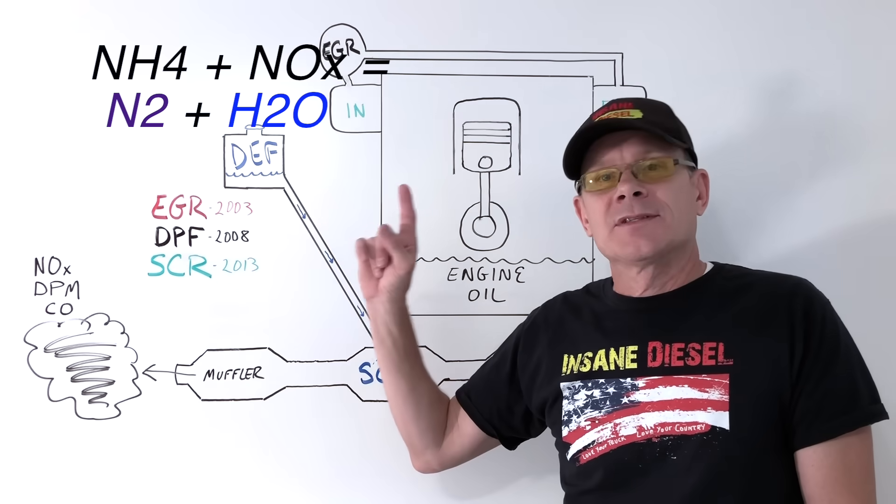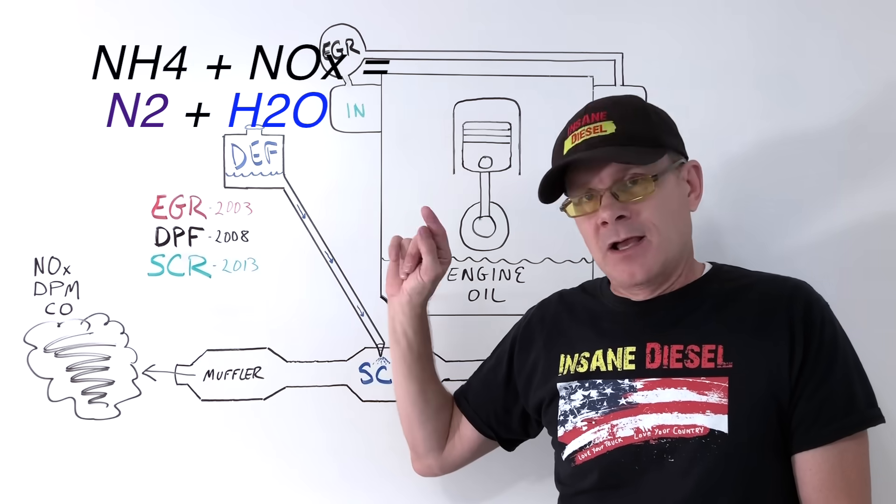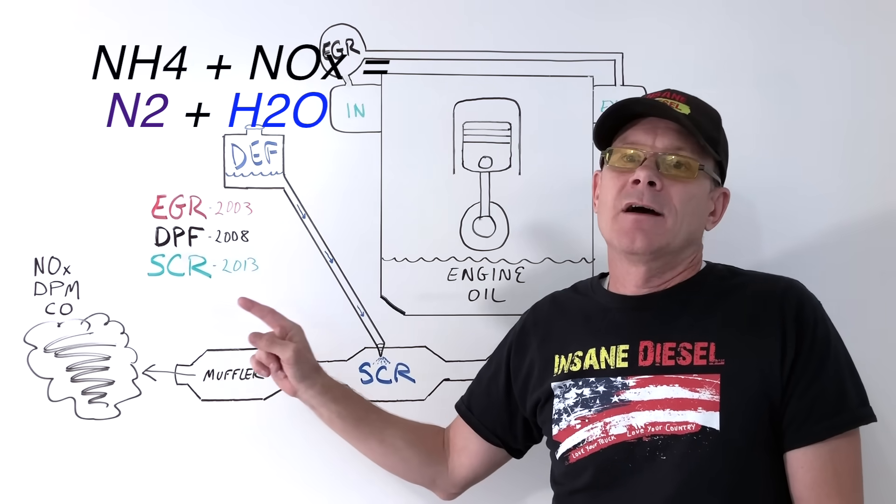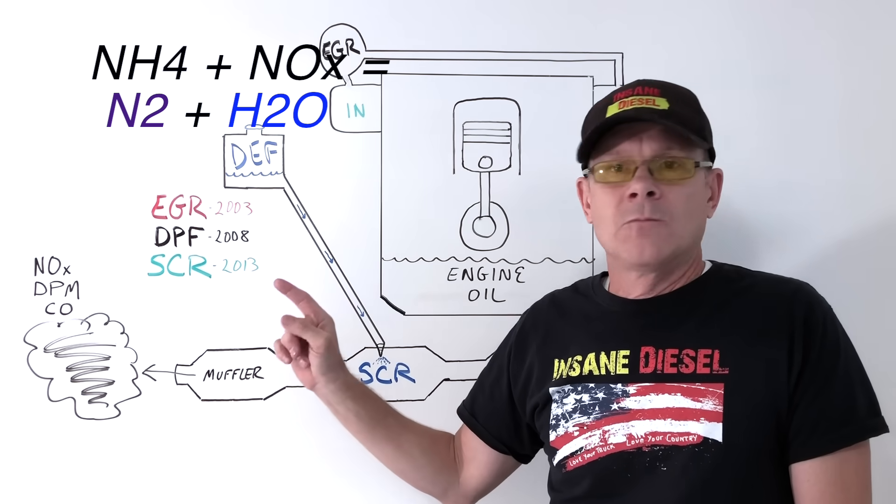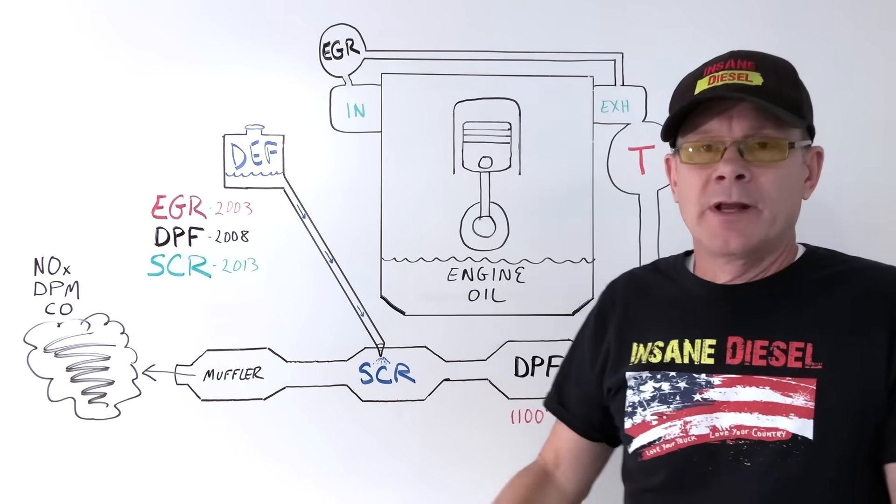The chemical formula looks something like this: NH4 plus nitric oxides, and out the tailpipe comes instead nitrogen and water, which is healthy to breathe. That's part of our normal air.